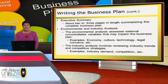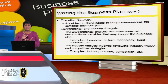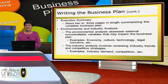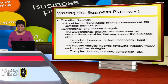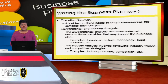Next is the environmental and industry analysis. After your executive summary, you must do a thorough environmental and industrial analysis by researching your market. The environmental analysis assesses external uncontrollable variables that may impact the business plan — for example, the economy, culture, technology, legal concerns, and so on. The industry analysis involves reviewing industry trends and competitive strategies, such as industry demand, competition, and related factors.